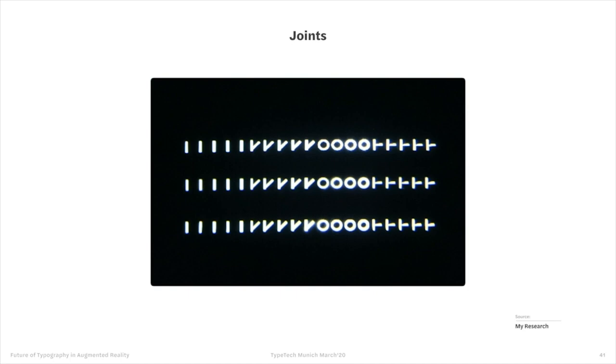On joints: this learning comes from Bell Centennial's ink trap design. In AR, excess brightness accumulates at stroke joints in a similar way to excess ink in print. You can introduce contrast at joints in sans-serif typefaces, or use 'light traps' — analogous to ink traps — to preserve the exact intended shape of each letter and counteract the brightening effect at joins.